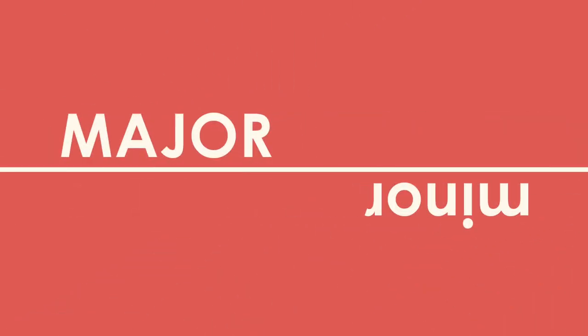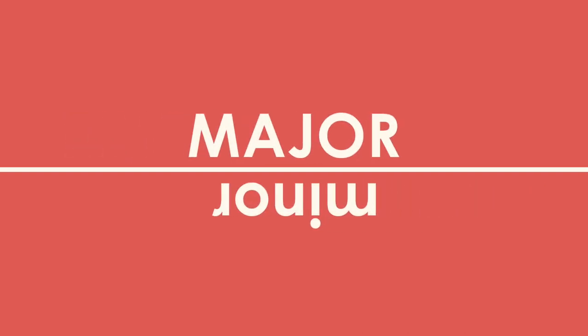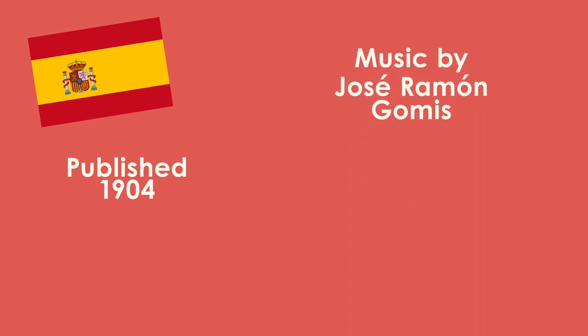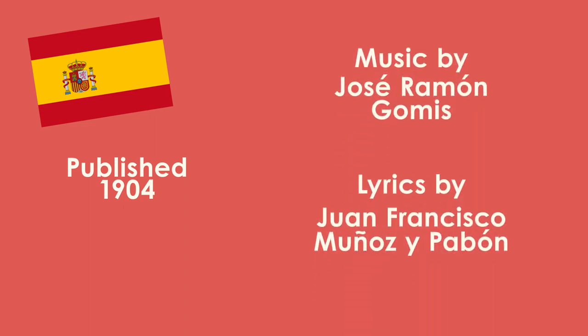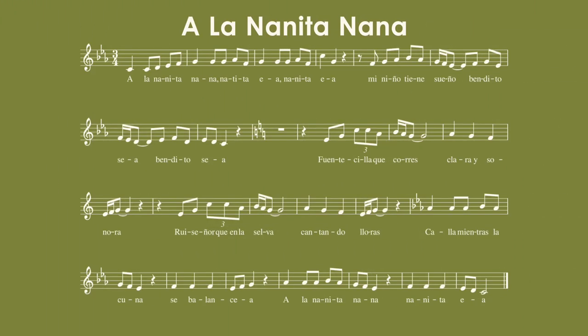Today I want to talk about parallel major and minor. The idea is that for every major scale there is a parallel minor scale. The example I'm using today is a Spanish Christmas Carol that was first published in 1904, composed by José Ramón Gomis with lyrics by Juan Francisco Muñoz y Babón. It's called A la nanita nana, and it's sung like a lullaby for the baby Jesus. It goes like this…